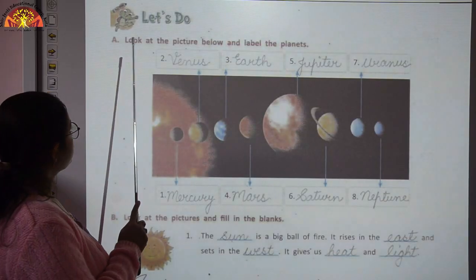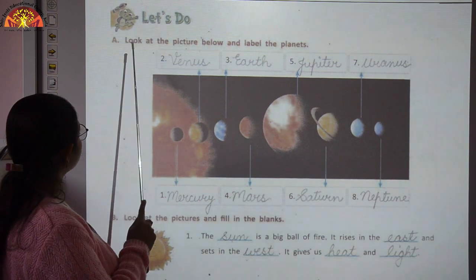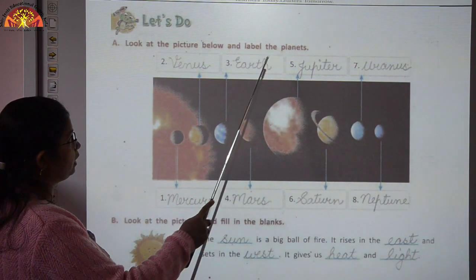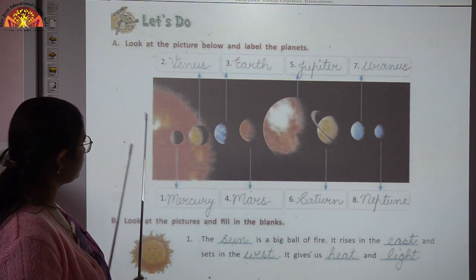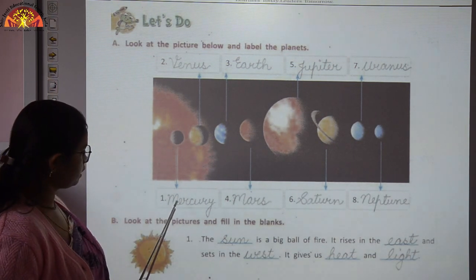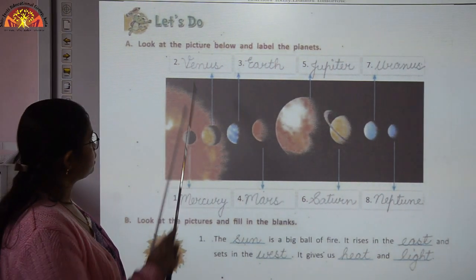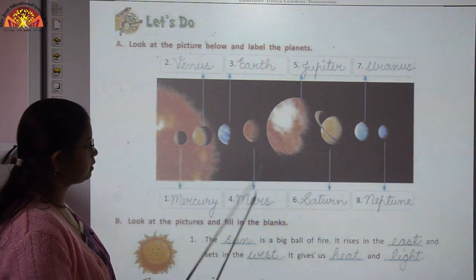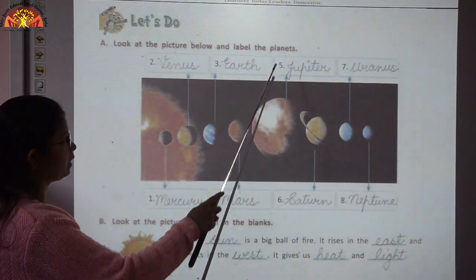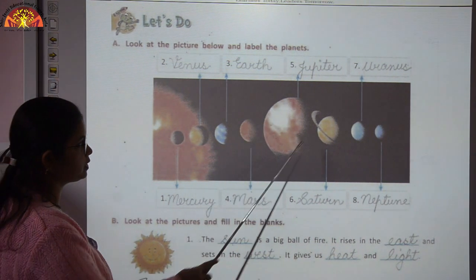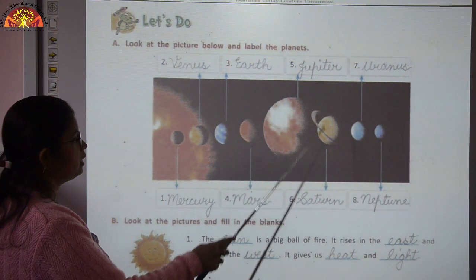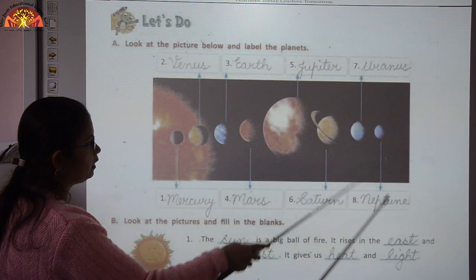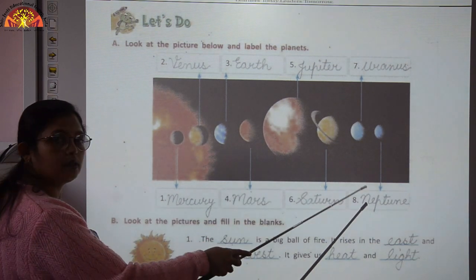Exercise A: look at the picture and label the planets. The first planet is Mercury, second is Venus, third is Earth, fourth is Mars, fifth is Jupiter — the largest planet, sixth is Saturn, seventh is Uranus, and the eighth planet is Neptune.